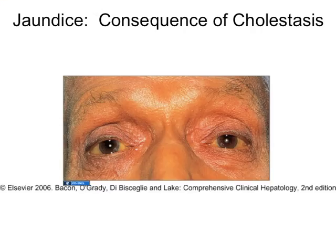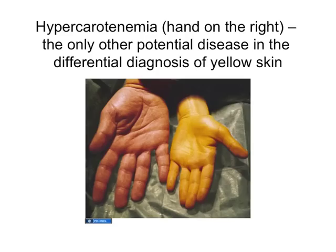Jaundice presents as very yellow sclerae and a yellow tinge to the skin. One other disease in the differential diagnosis of yellow-looking skin is hypercarotenemia — people who are big juicers, taking vegetable juices, particularly carrot juice, in very large amounts. They look yellow but their bilirubin is normal. History is key here — ask them about their carrot juice intake.